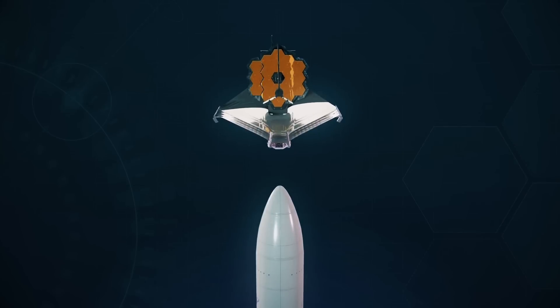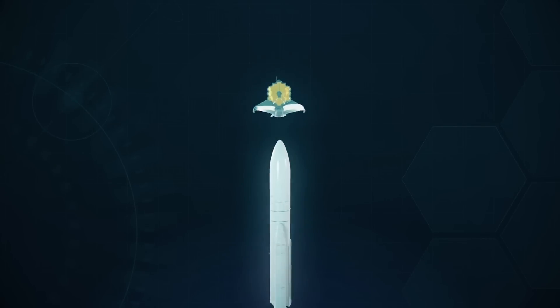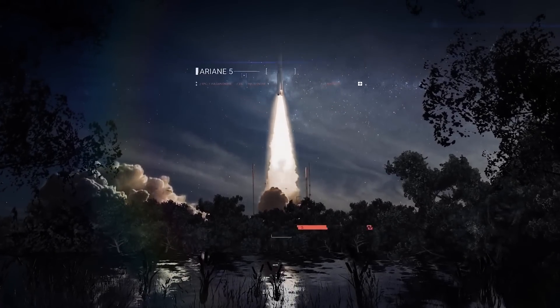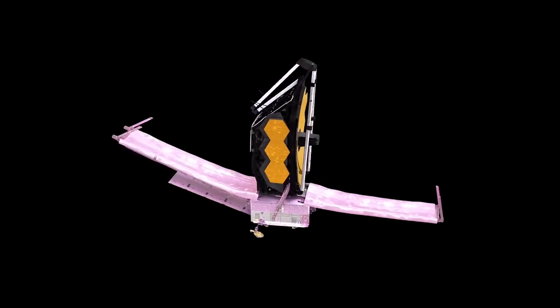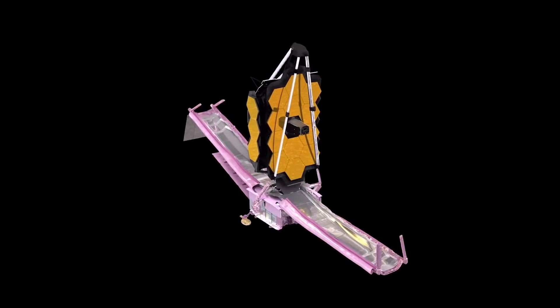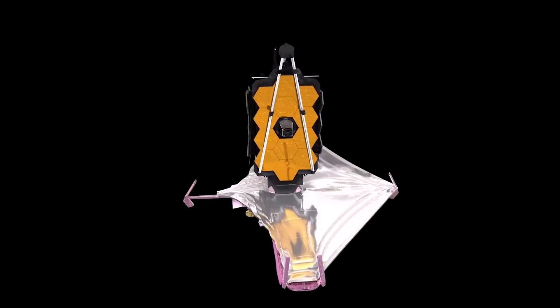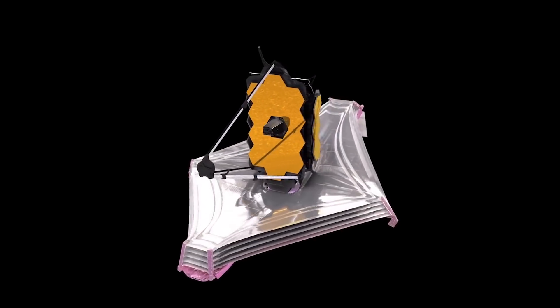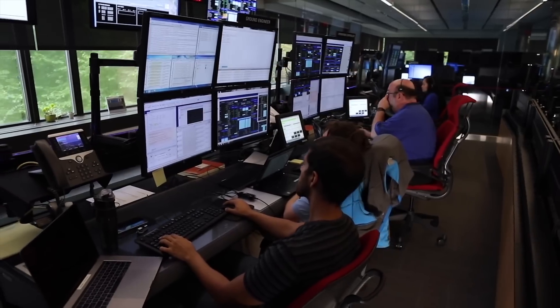After the launch, it came loose from the rocket and started to expand. The first deployment occurred around 30 minutes after launch, as the solar panels opened up, allowing the telescope to receive electricity from the sun. Numerous astronomers are competing for time with JWST because of the telescope's potential.